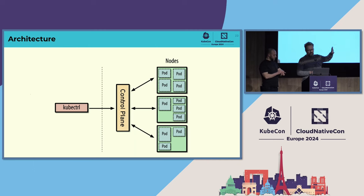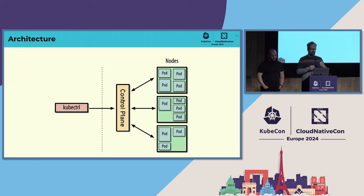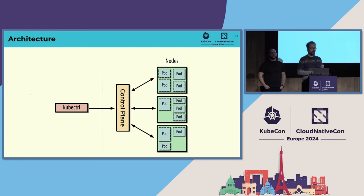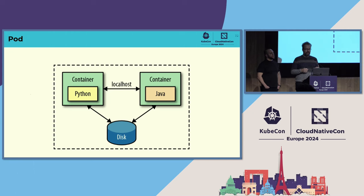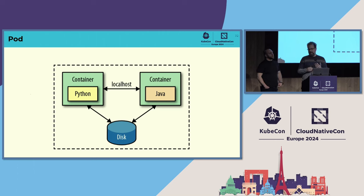Here's a 10,000-foot overview of how you interact with Kubernetes. You have a CLI or other UI, an API server or control plane, and many nodes — the compute units in your cluster. The control plane distributes workloads to the different nodes. The central element in Kubernetes is the pod, a higher-level abstraction of a container. A pod can contain one or more containers that can communicate via network or via a shared volume. These containers are opaque — everything running in a container stays in the container.